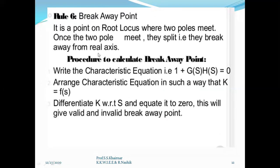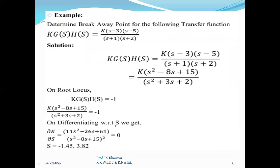We will now see what is the breakaway point and how to find it. The breakaway point is a point on the root locus where two poles meet; once they meet, they split and break away from the real axis. To find the breakaway point: first, write the characteristic equation 1 + G(s)H(s) = 0; arrange it so that k = f(s); then differentiate k with respect to s and equate to zero. This gives valid and invalid breakaway points, and we decide which lies on the real axis locus.